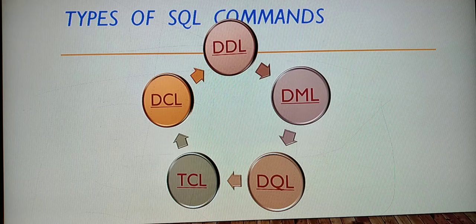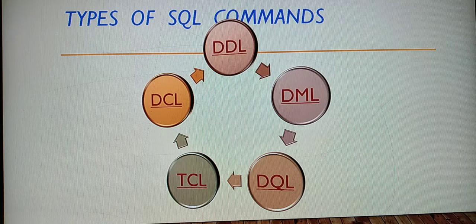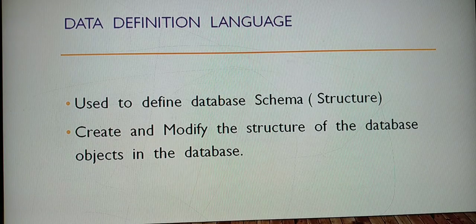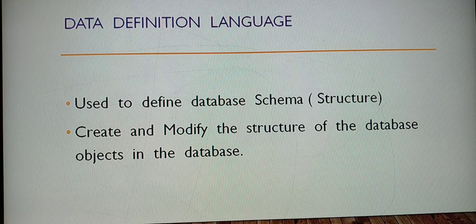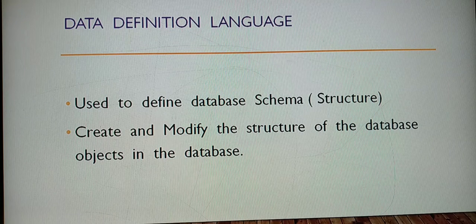There are five types of SQL commands: DDL, DML, DQL, TCL, and DCL. DDL stands for Data Definition Language. By the name itself, it is going to define the schema or structure - it creates and modifies the structure of database objects.